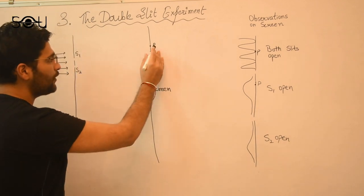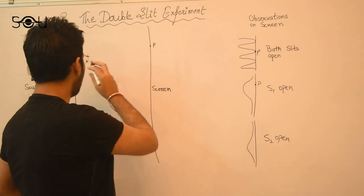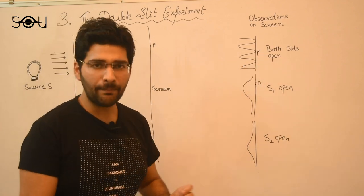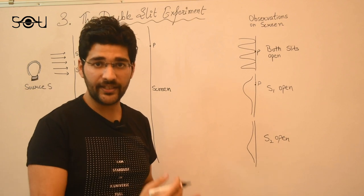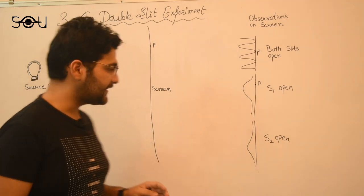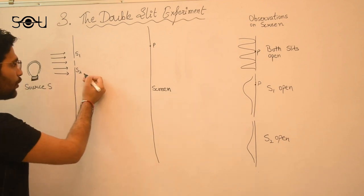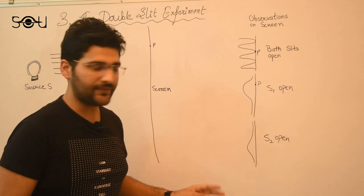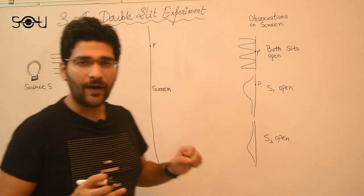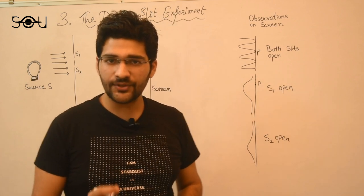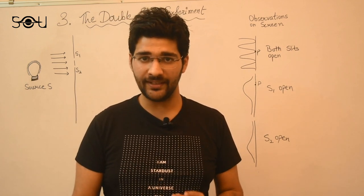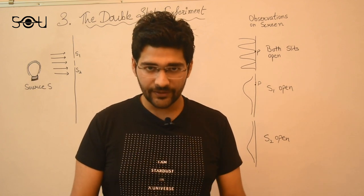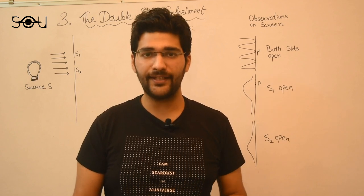For that, consider a point P on the screen. When both the slits are open, we see that we have a dark fringe at P—no particles of light are reaching point P on the screen. But when I close one of the slits, when S2 is closed and light is only passing through S1, I see that a good number of particles of light are reaching the point P. Now, why would the particles of light be so shy to reach P when both the slits are open and they do reach P in good number when one of them is closed?